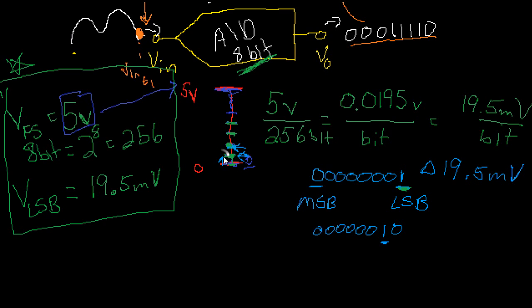So here's the first one — that represents 19.5 volts. And we're going up one more, because this point represents 00000 and this point represents 00001. This step right here is represented by the value 00010, that's 2. So 19.5, and then another 19.5 increment gives us a value of 39 millivolts, and so on.